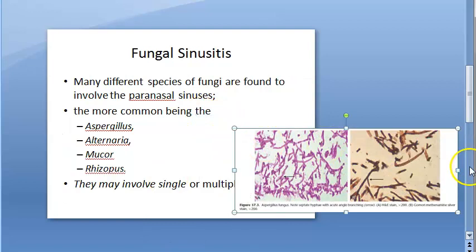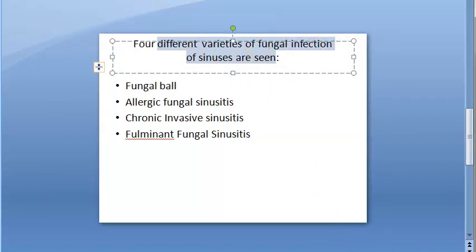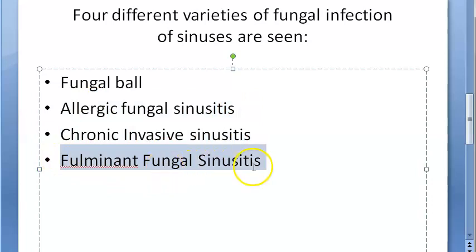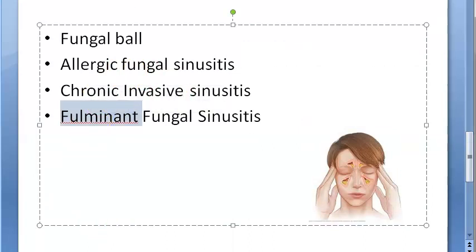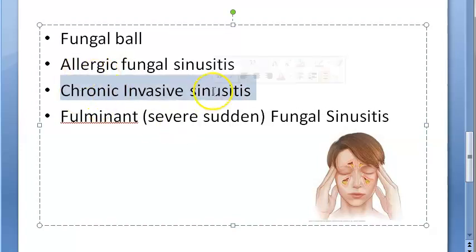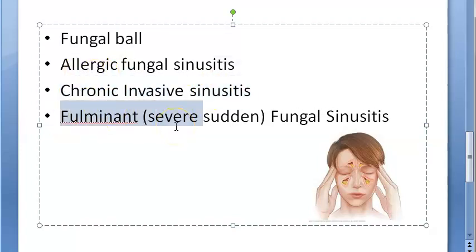The four varieties of fungal infections are: fungal ball, allergic fungal sinusitis, chronic invasive sinusitis, and fulminant fungal sinusitis. Fulminant means severe and sudden — it is an acute onset condition. It occurs in people who are immunocompromised or diabetic, and is usually caused by Mucor or Aspergillus.